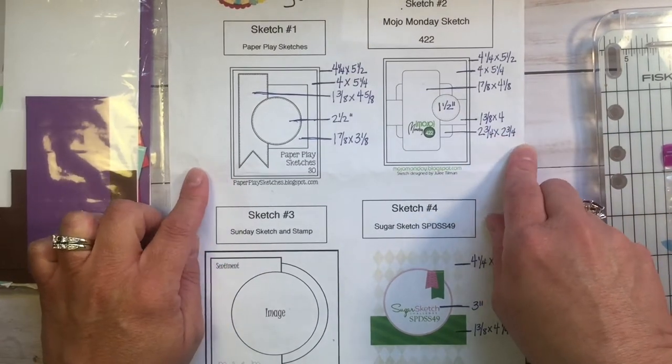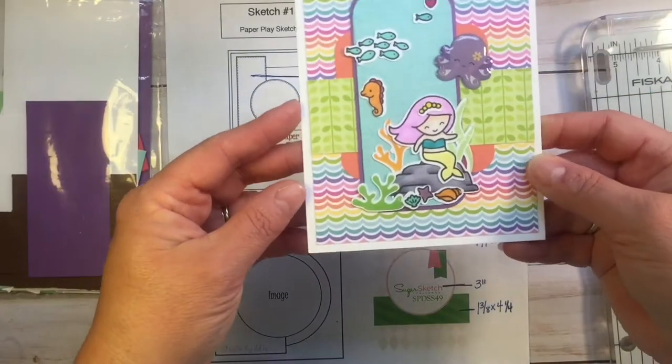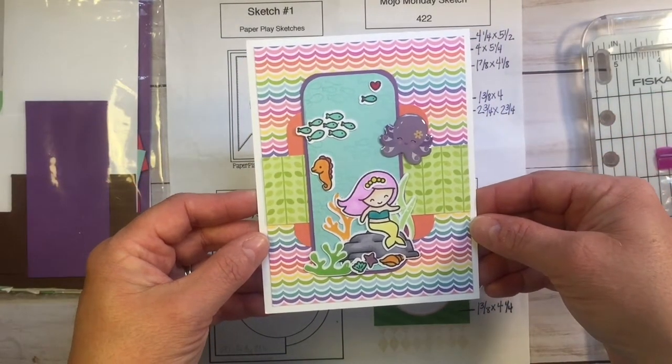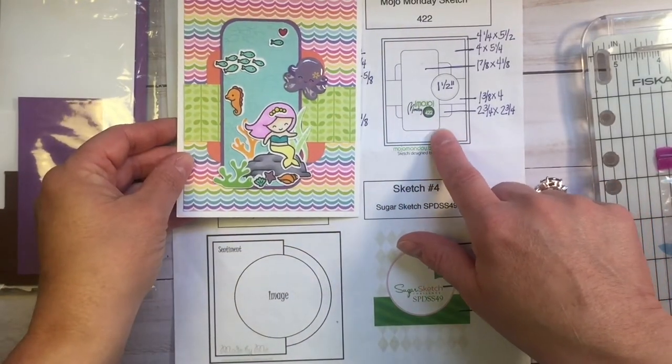I'm showing you the sketch sheet here. The card I posted for the blog hop was sketch number two, which is this card here, but for the card I'm going to make for you today, I'm going to actually use sketch number one.